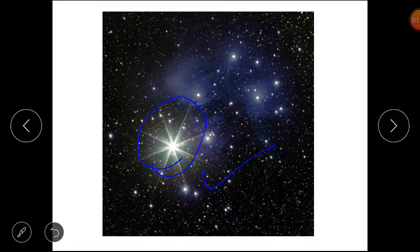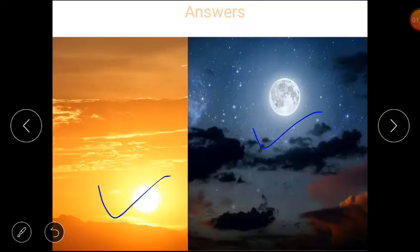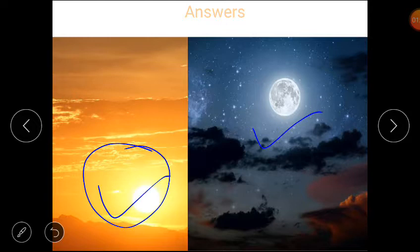Students, the sun looks the brightest. Sun jo hai, woh in teeno mein sabse brightest nazar aata hai. The moon is smaller than the sun. Stars look smallest.